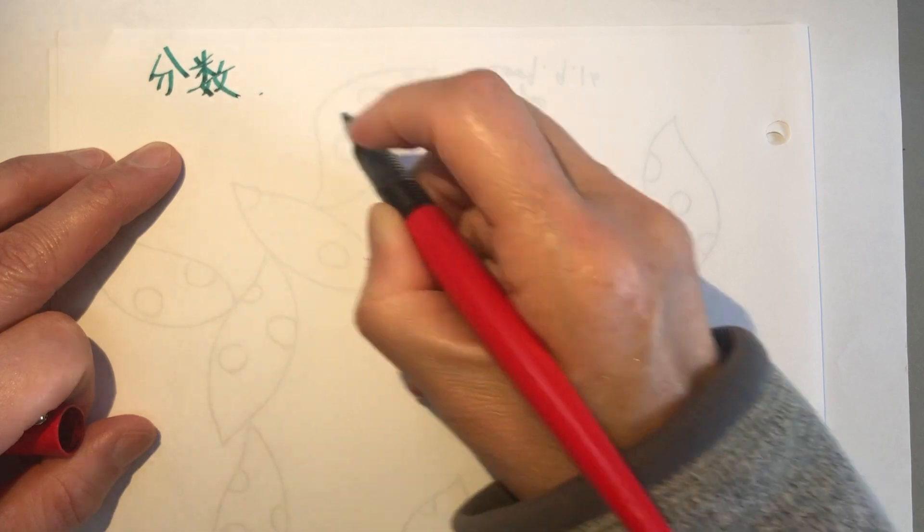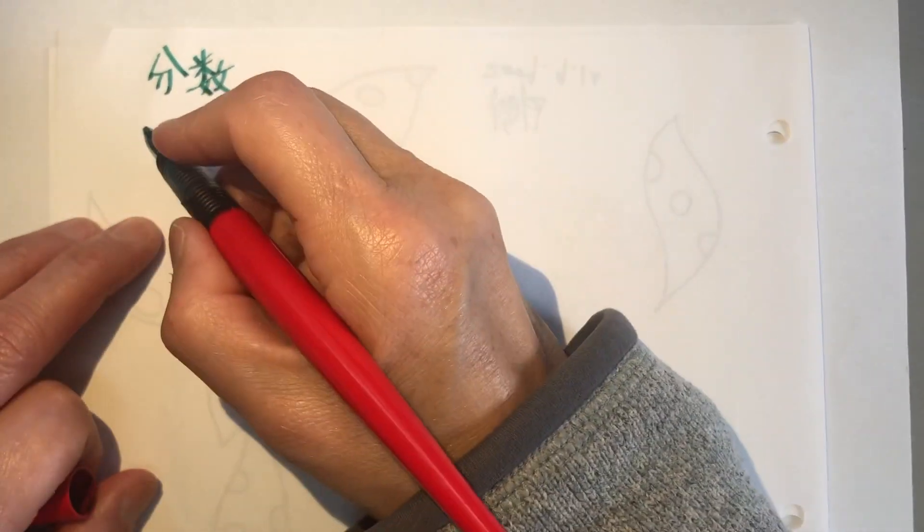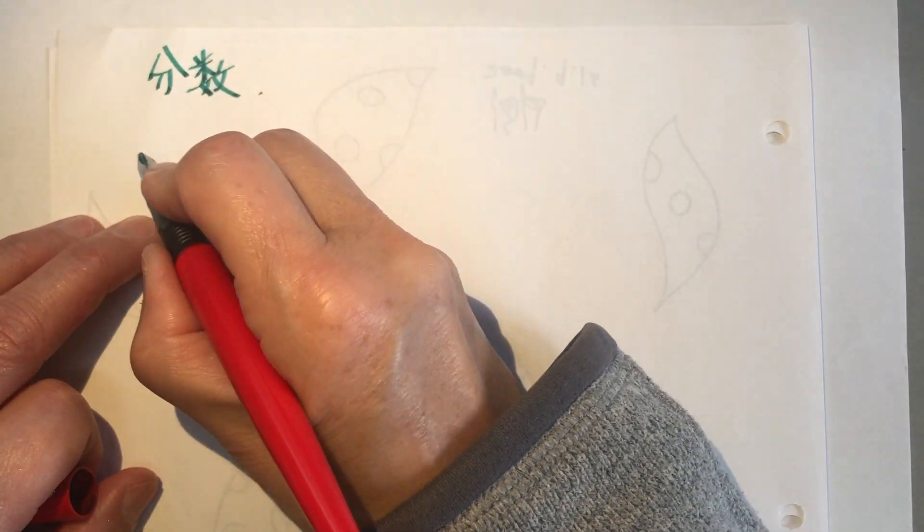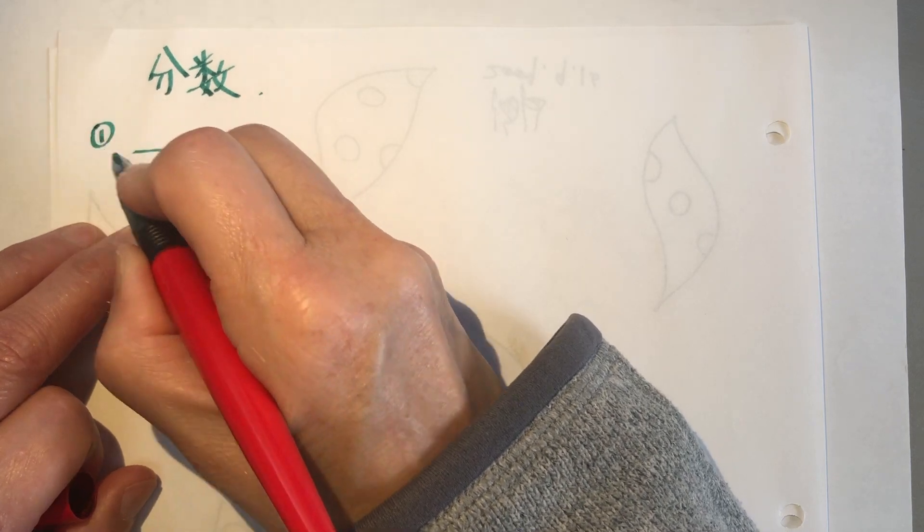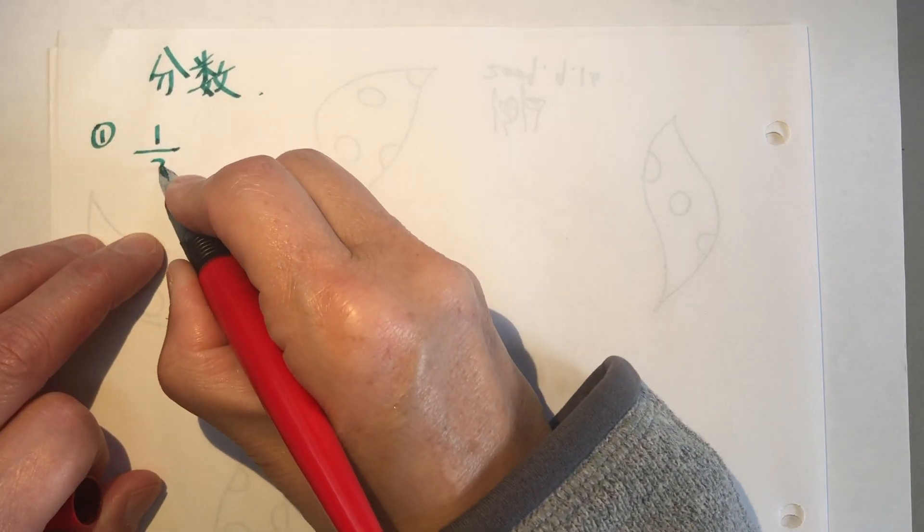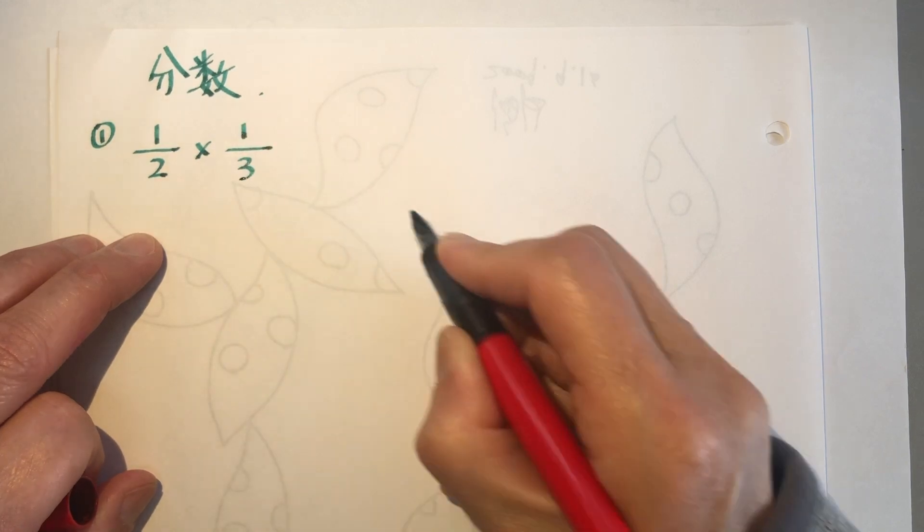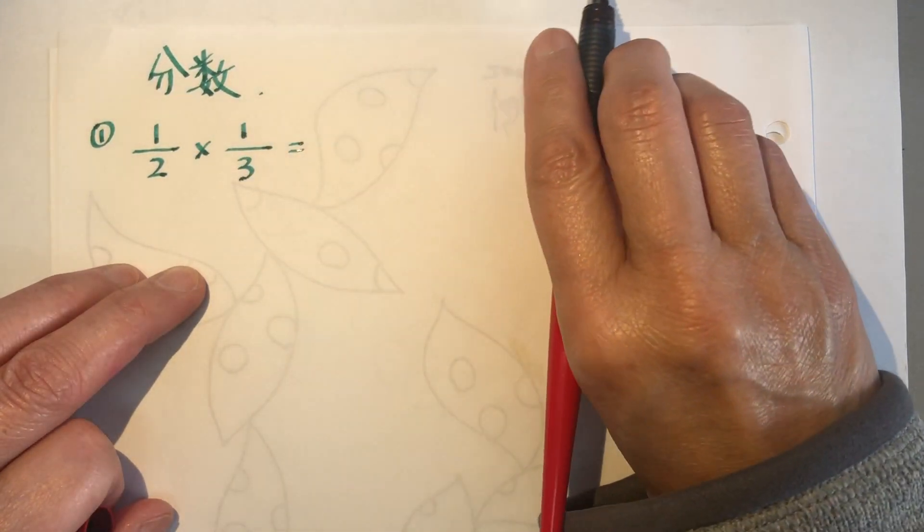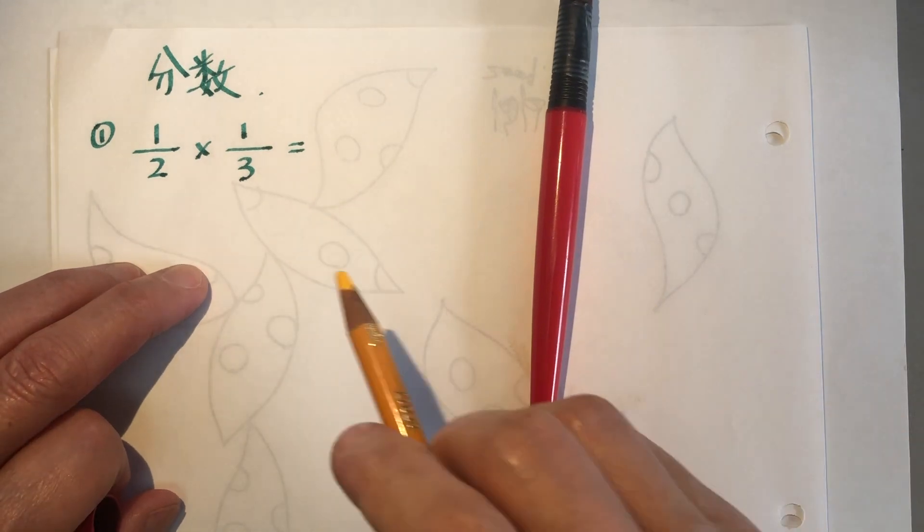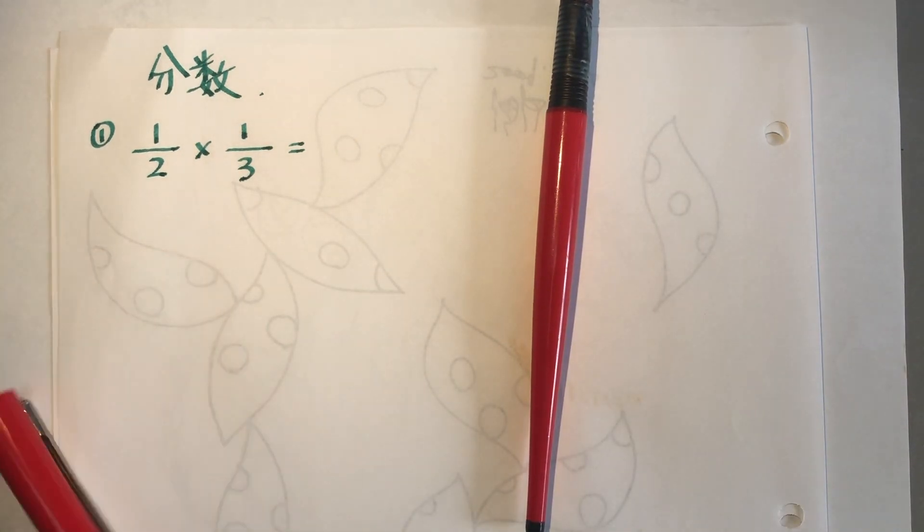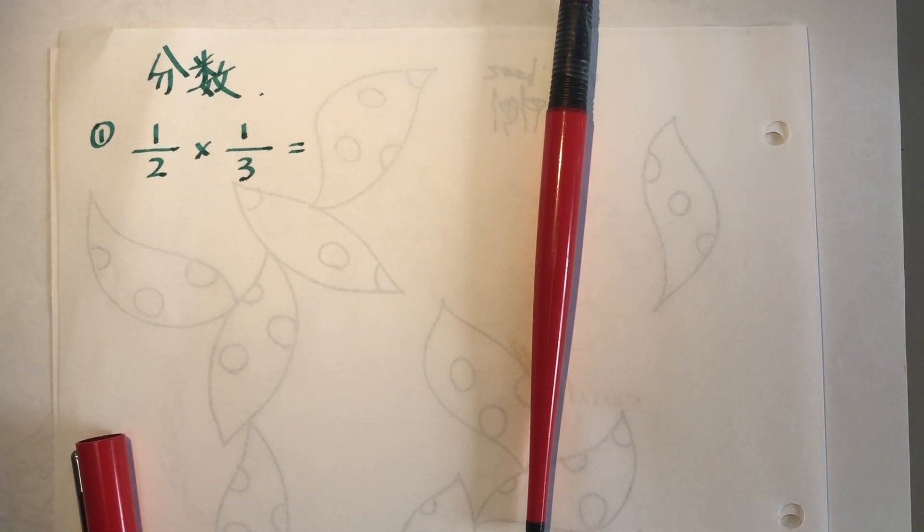First we start from fraction multiplication. First problem: 1 over 2 times 1 over 3 equal to. What do we do? We multiply bottom with bottom and top with top.